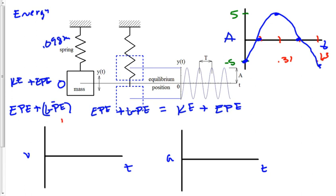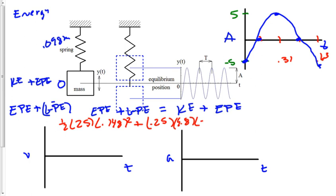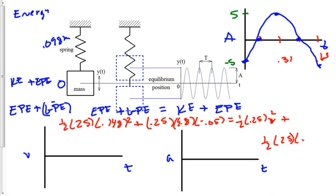In red, I'll put all the numbers in. Elastic potential energy will be one half times k, which is 25, times 0.098 meters of stretch plus 0.05 more, so that's 0.148 squared, plus gravitational potential energy which is 0.25 times 9.8 multiplied by negative 0.05 since we went downwards. That equals one half times 0.25 times v squared, plus one half times k (25) times the equilibrium stretch 0.098 squared.